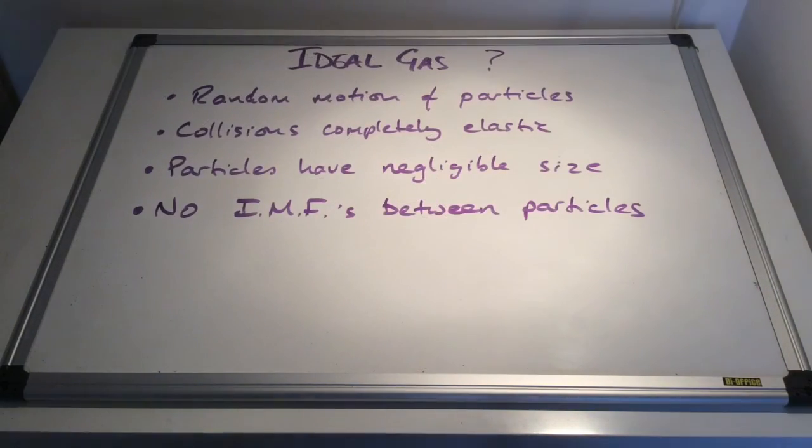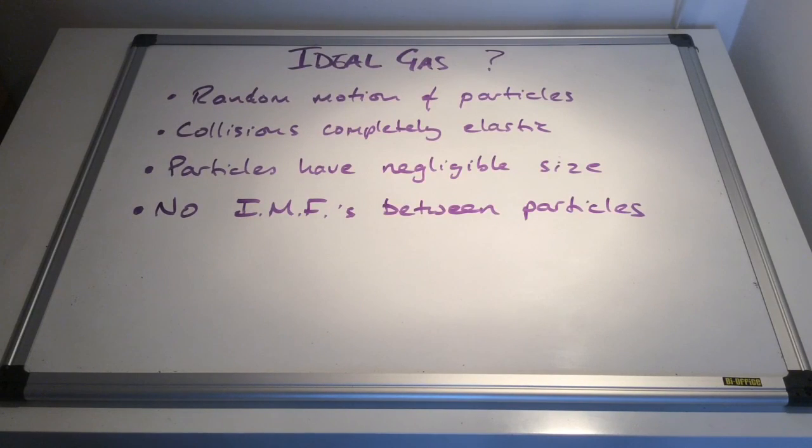So we've done all this talk about ideal gases. We've done the calculations, but what is an ideal gas? And there's the four conditions for an ideal gas. They must have random motion of their particles. The collisions between the particles are completely elastic. The particles have negligible size, and the particles have no intermolecular forces acting between them.